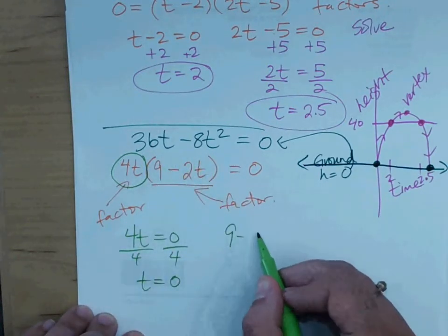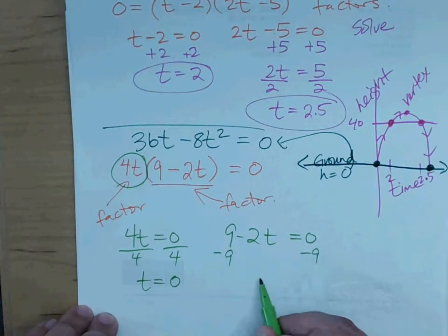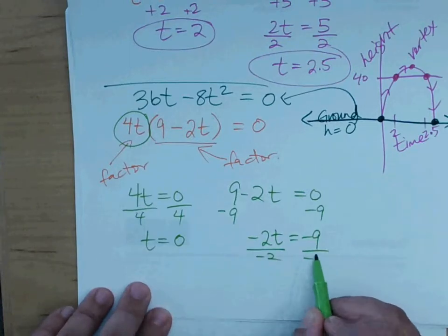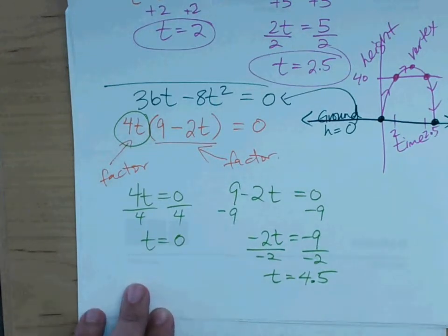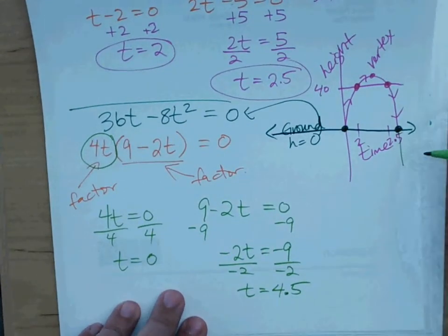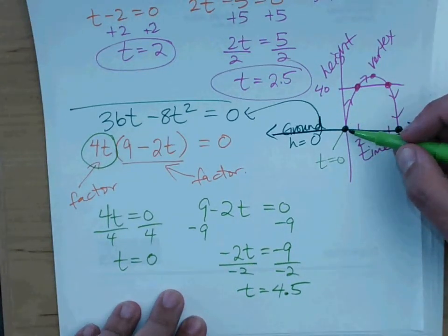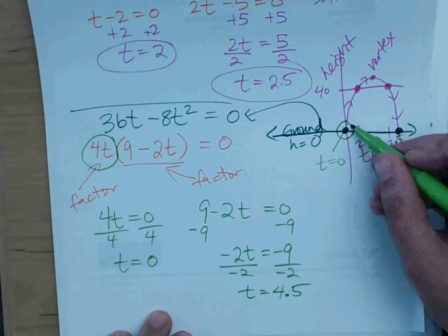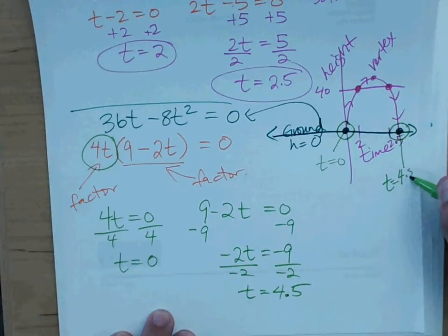I'm going to set this factor. 9 minus 2t equals zero. What should I do to solve here? Subtract 9. I get negative 2t equals negative 9. And now what? Divide by negative 2. t equals 4.5. Half. Negative divided by a negative is a positive. So if we go back here and look at our graph, that means it was on the ground when t equals zero because somehow you threw a ball directly from the ground. I don't know how you did that. But you know, put your hand on the ground with the ball and throw it in the air. No one does that. But t equals zero. So it was on the ground here. And what was the time here when it went up and back down and it landed? What time was it? t equals 4.5 seconds.